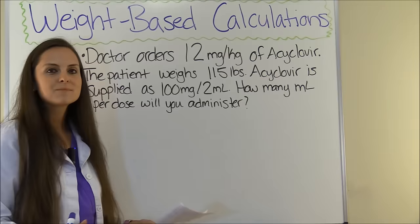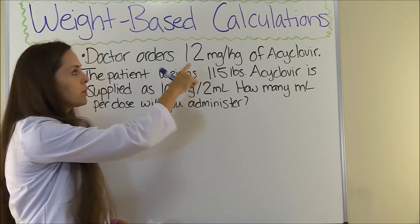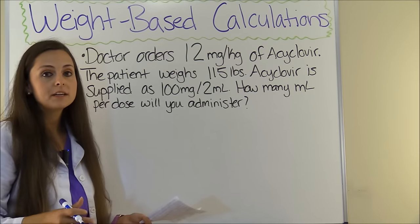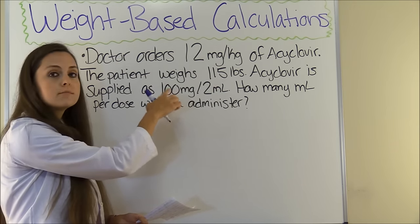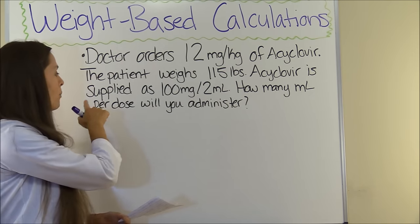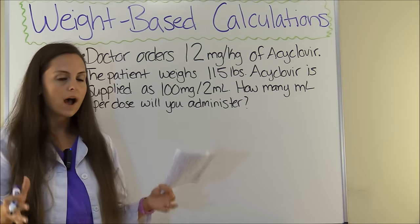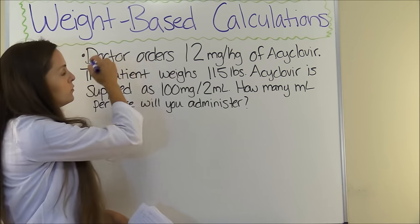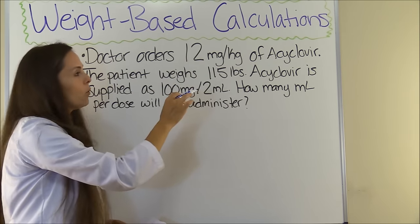So let's get started. This problem says: doctor orders 12 milligrams per kilogram of acyclovir. The patient weighs 115 pounds. Acyclovir is supplied as 100 milligrams per 2 milliliters. How many milliliters per dose will you administer? Looking at this question, we can tell that this is a weight-based problem because the doctor has ordered acyclovir and the dosage is in weight-based form.